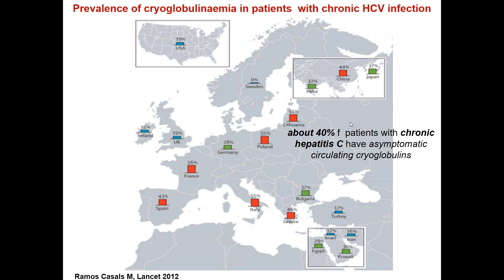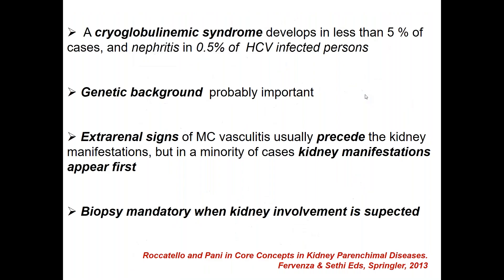Detection of circulating cryoglobulin is relatively common in patients with chronic hepatitis C, and these cryoglobulinemias are usually asymptomatic. These patients should not be confused with those showing clinical features of cryoglobulinemia vasculitis. The association between cryoglobulinemia and HCV infection is very strong — in some reports, more than 90% of cases. However, a cryoglobulinemia syndrome develops in less than 5% of cases, and nephritis can develop in only 0.5% of HCV infections.